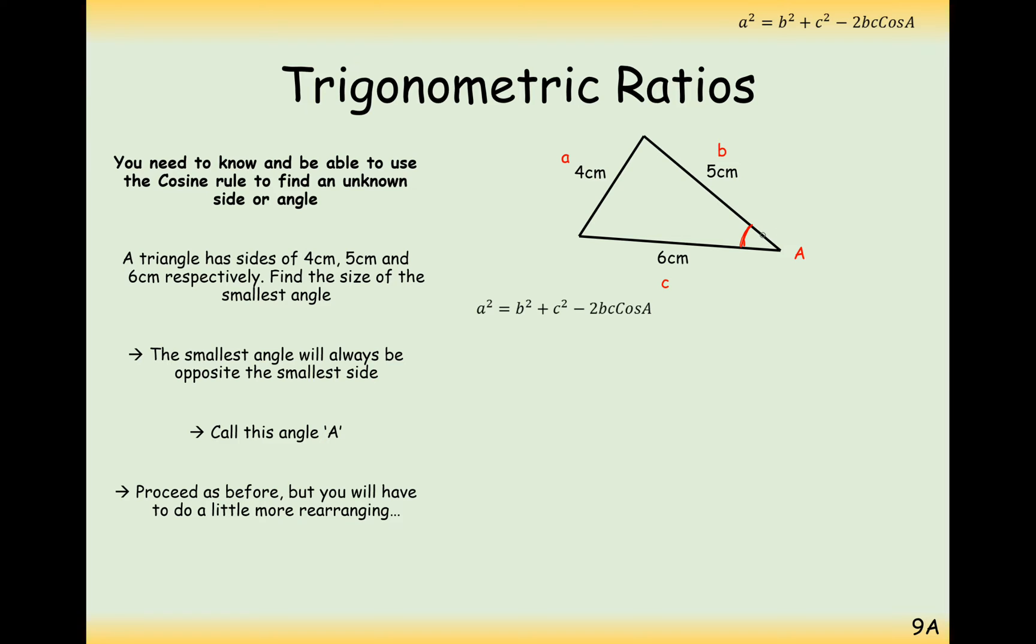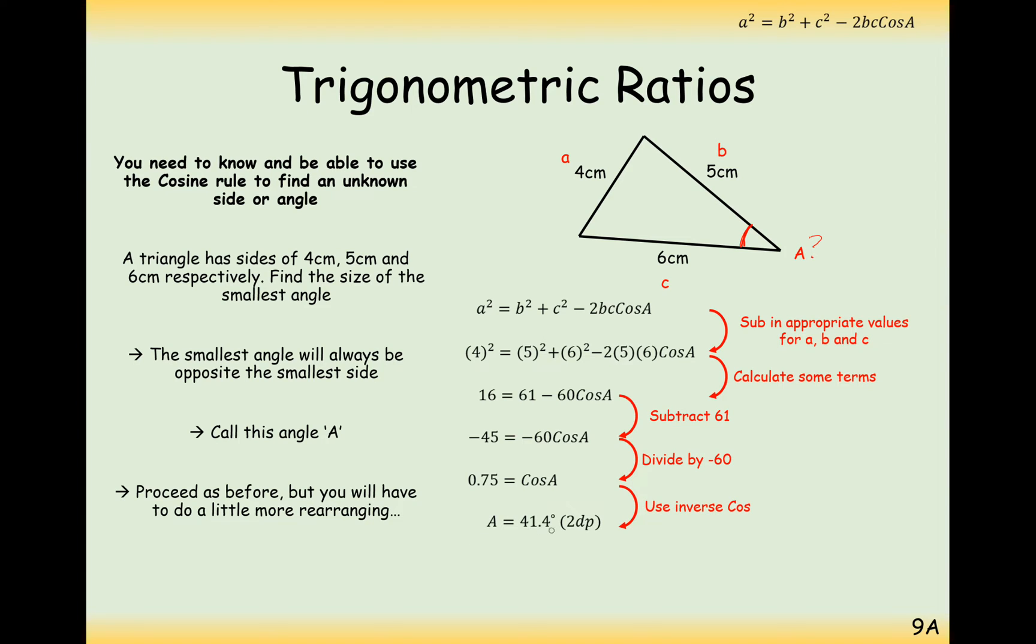So now what we'll do to work out the value of this angle is substitute in the values that we know, simplify a little bit, and then do a bit of rearranging to work out what cos needs to be. So cos of A needs to equal 0.75 and then we use the inverse button on our calculator to get the value of A. So A here is 41.4 degrees. So that's how we can use the cosine rule to work out an angle if we know three of the sides.